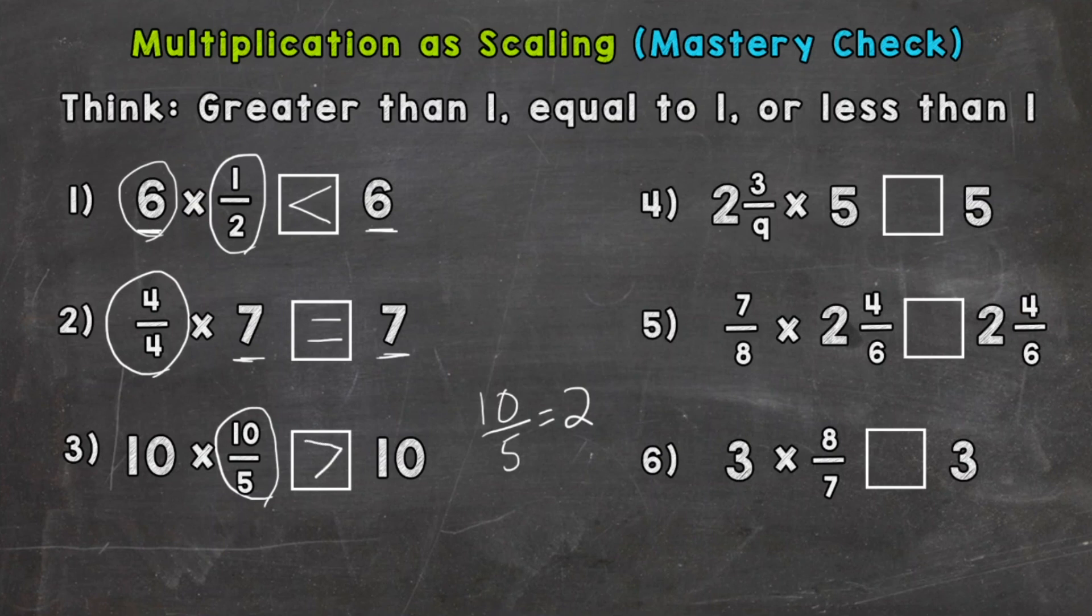Number four looks like we have 5 on each side, so we're multiplying 5 by 2 and 3/9, which is greater than a whole, so it's going to increase the value of our 5 when we multiply those two numbers together. So 2 and 3/9 times 5 is greater than 5.